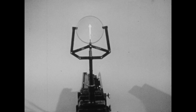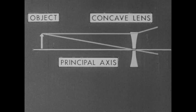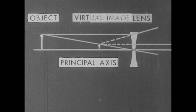How can we see an image we cannot project onto a screen? As we said, a concave lens forms an upright, reduced, virtual image.